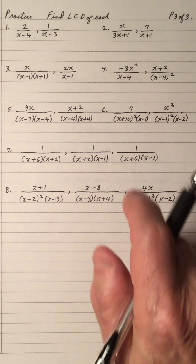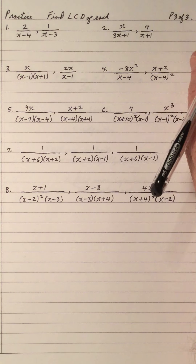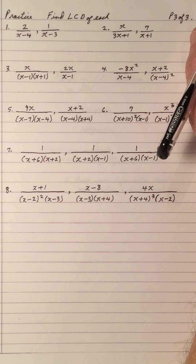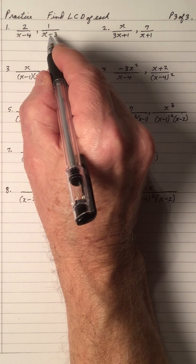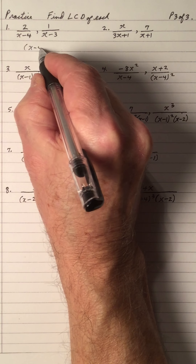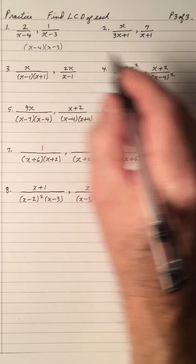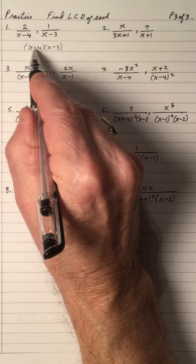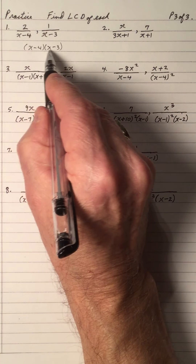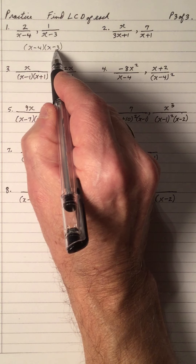Practice: pause the video and work these out. It's very important to find the LCD of the fractions, because if you can't, you won't get addition and subtraction right. Practice number 1: the denominators are (x minus 4) and (x minus 3). Each is a different factor — one of each — so the LCD is (x minus 4) times (x minus 3). I leave them in brackets; I don't multiply them out.